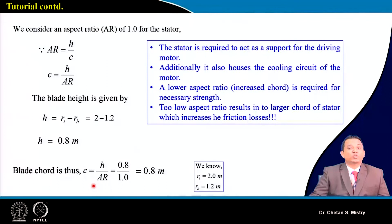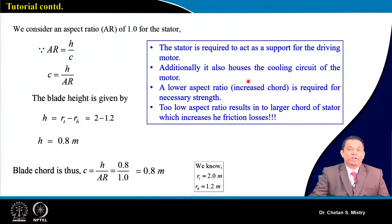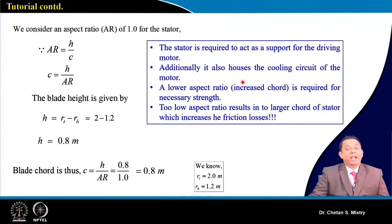With a higher degree of reaction, what is the use of the stator? The stator is required to support the driving motor. In a closed-circuit wind tunnel the motor is located on the back side of the rotor-stator combination, so the stator acts as a supporting structure. Additionally, the motor has a high power capacity of 750 kW, generating significant heat; cooling pipes and circuits can be accommodated through the stator blades.